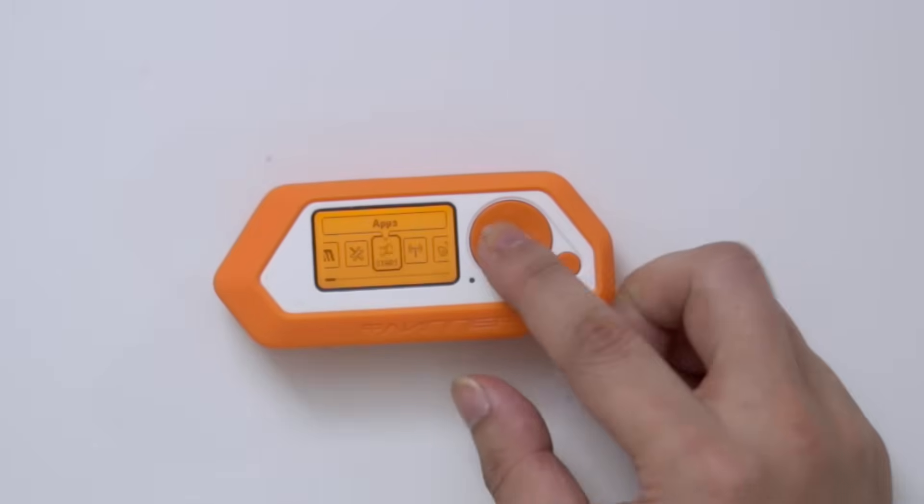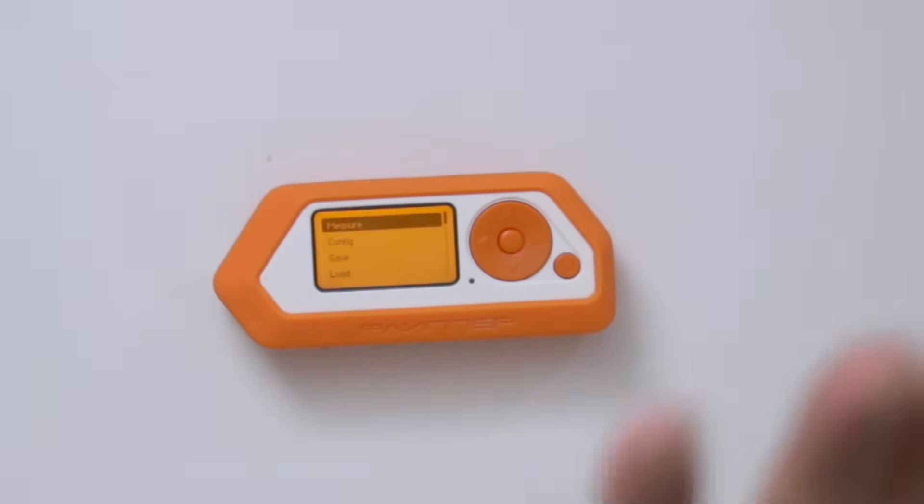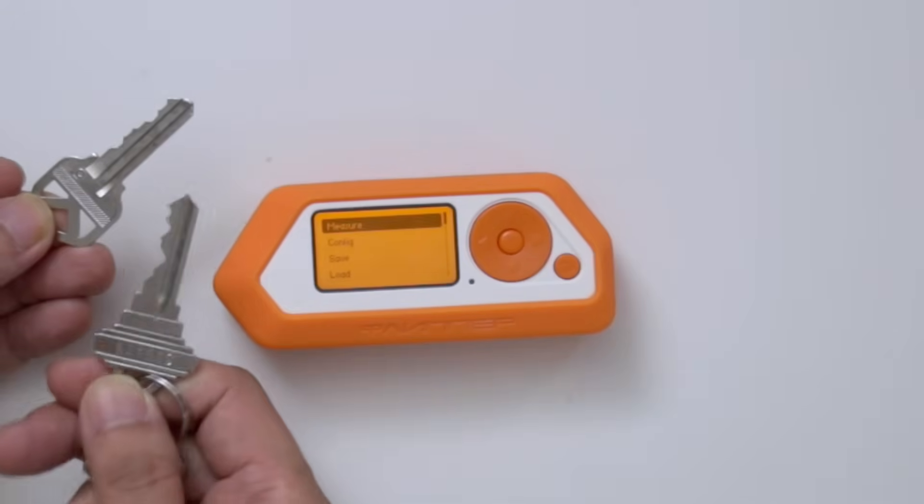If you do have the Momentum firmware installed, all you have to do is just head over to apps, scroll down over to tools, and then head over to key copier. Now, you can do two forms of keys on this. You could actually use something called a QuickSet or something called a Kwikset.